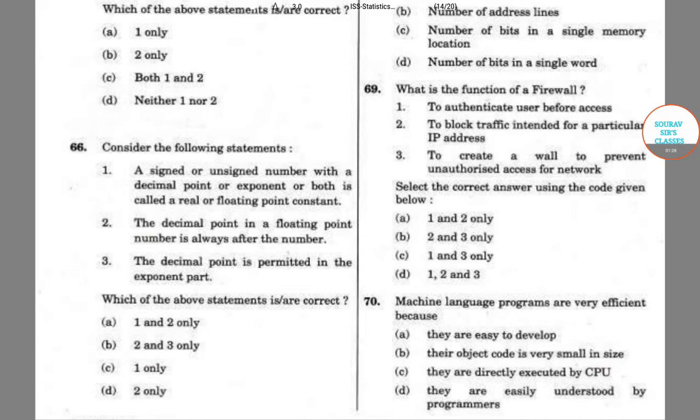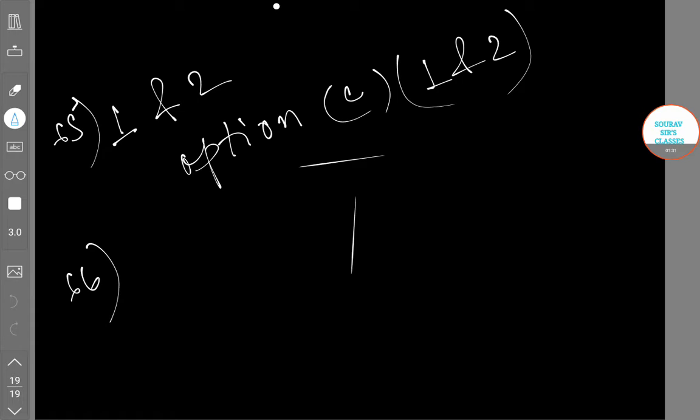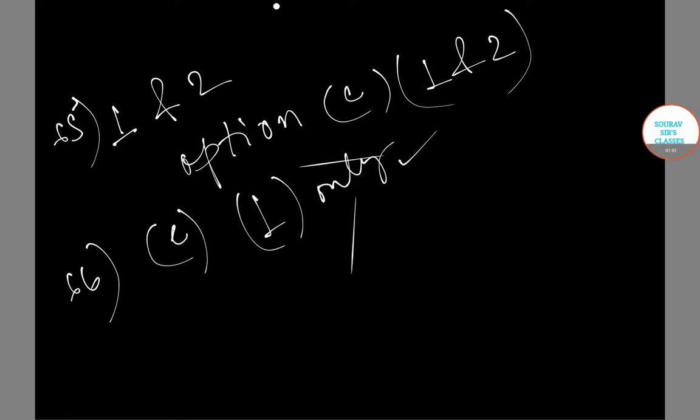So let's start. A signed or unsigned number with a decimal or exponent both is real or floating point constant. The decimal point needn't be there in a floating point number. The decimal point is not permitted in the exponent part. So option C is correct that is only consideration 1 is right. So correct option is C.